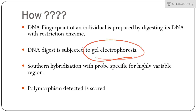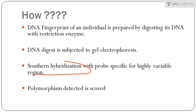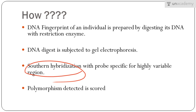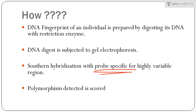The separated DNA fragments are then subjected to Southern hybridization — that is, they are hybridized with a probe specific for a highly variable region. A probe is an oligonucleotide complementary to the highly variable region or polymorphic loci. These probes are either radiolabeled or tagged with reporter molecules so that their binding to the complementary sequence can be easily detected.